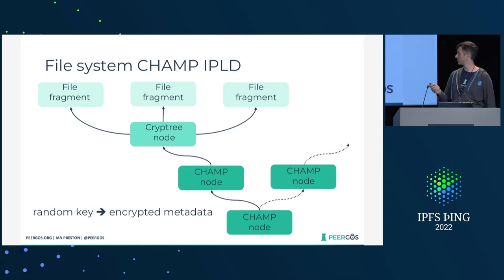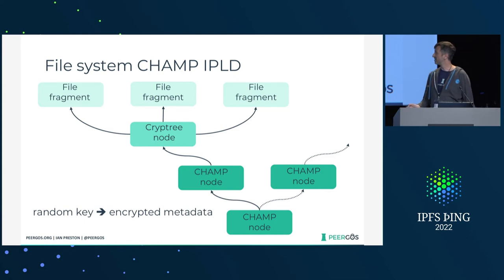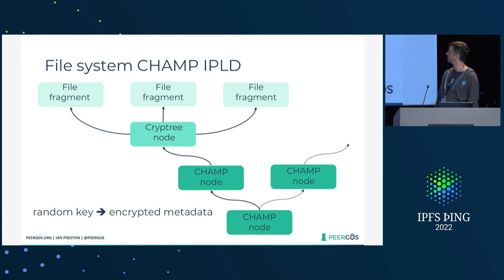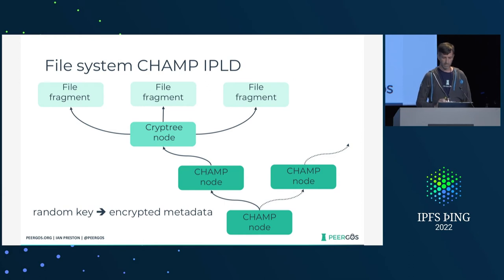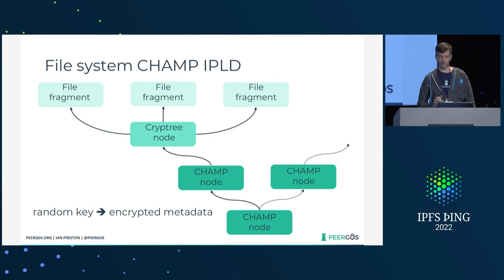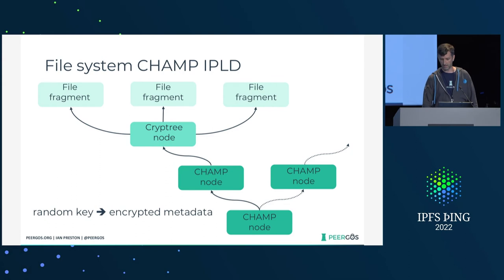So this is how it looks: you've got your internal CHAMP nodes, then the Cryptree node for each chunk of your file or directory, and that can have links to the encrypted file fragments. The keys in this CHAMP are basically random. Subsequent keys in a file are not random, but they're still not deducible by the server — so the home server can't link the different chunks of the same file. We use that to hide the size of the file, among other ways.